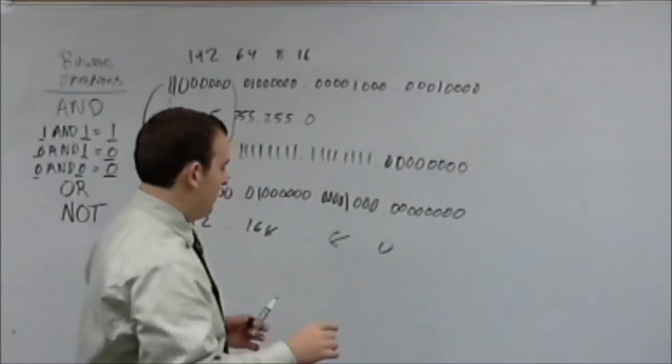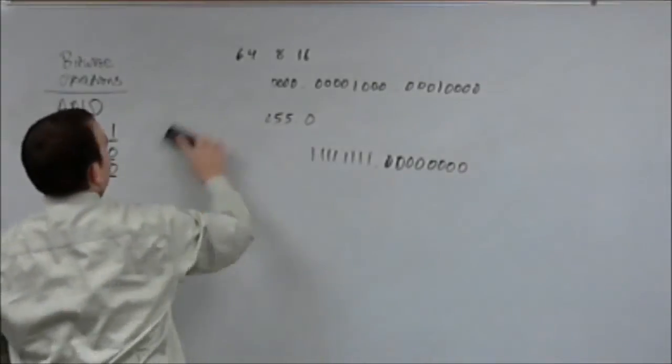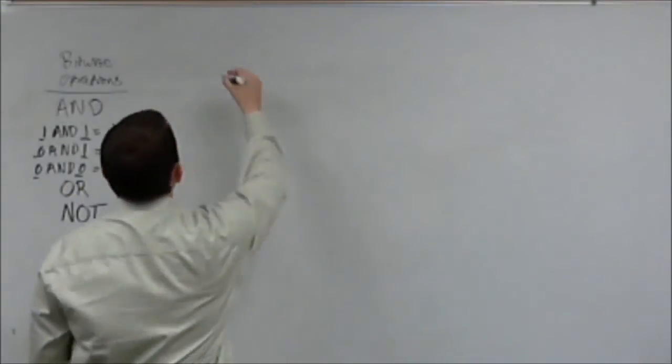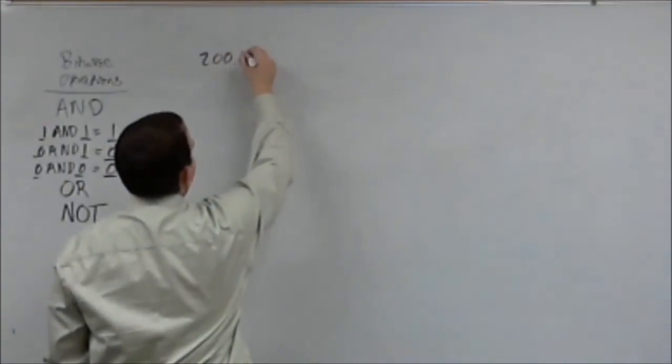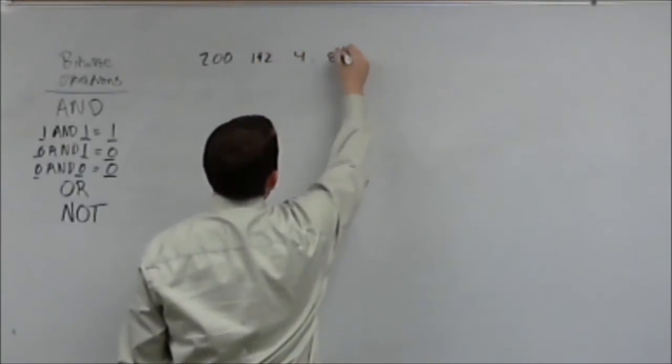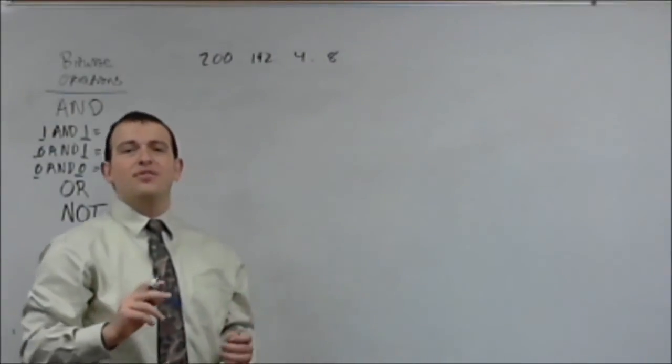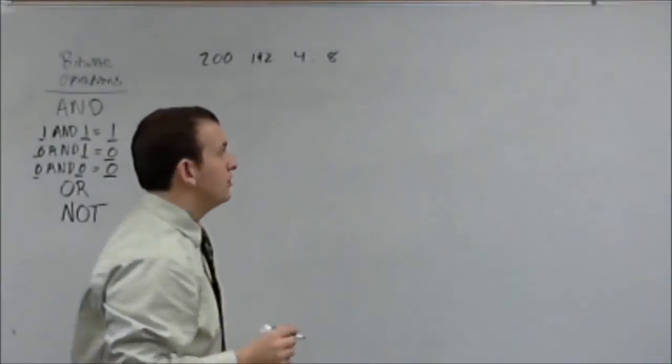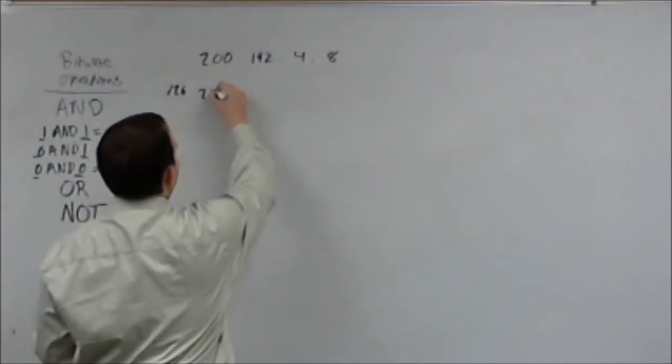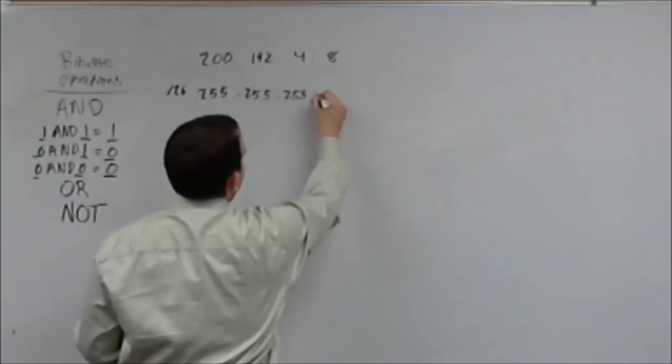Alright, I'd like to give you one more example of bitwise operations and then we'll call it a lecture. So, let's do a little bit more of a complicated address. Let's take 200.192.4.8. Now, here's the tricky part. Instead of using a slash 24 subnet mask, this time we're going to use a slash 26 or 26 bits are active. So, that's going to be 255.255.255.192.